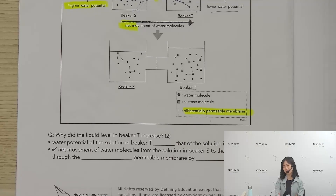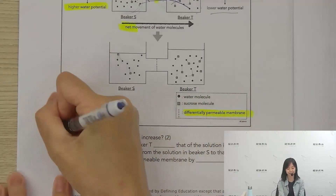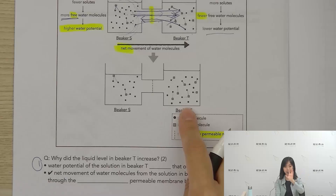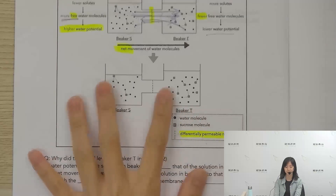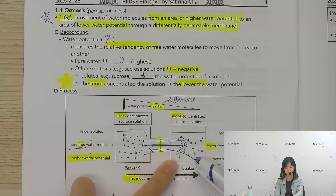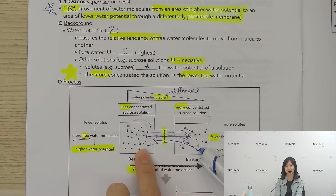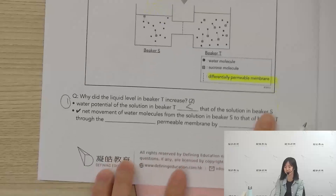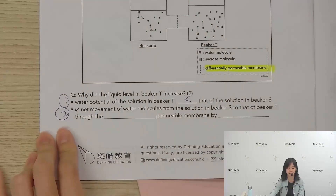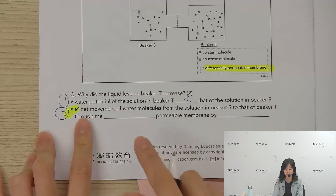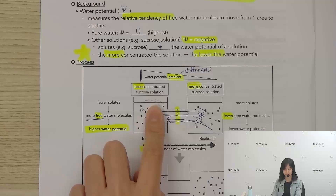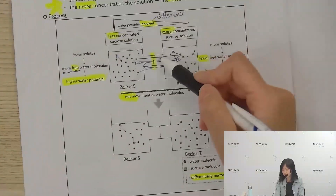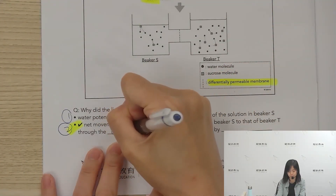Let's look at this together. Every time we answer these questions, for the first mark, remember to compare the water potential difference between the two places. You need to state which water potential is higher. The water potential of the solution in Beaker T is lower than that of the solution in Beaker S. For the second mark, state that there is a net movement of water molecules from the solution in Beaker S to that of Beaker T, through the differentially permeable membrane.